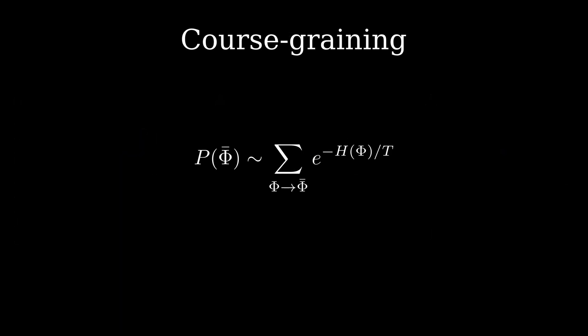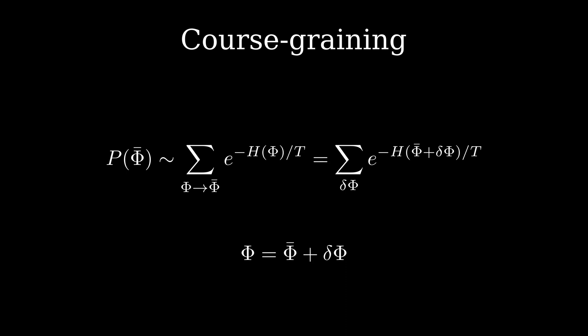We can now say that the probability of being in some coarse-grained state, phi bar, is equal to the sum of the probabilities of being in any of the regular states that become phi bar when coarse-grained. We can sum over delta phi instead, since any phi that goes to phi bar can be specified by the difference between the two, which is delta phi.